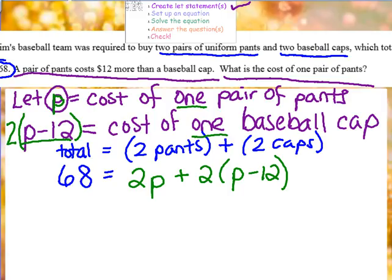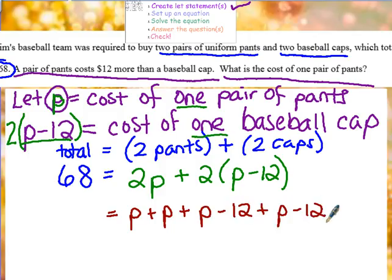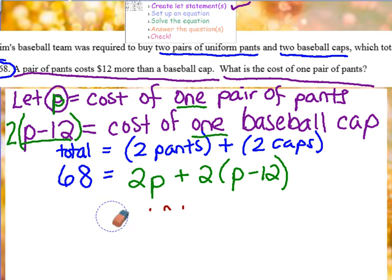My plus sign. And now two caps. If p minus 12 is the cost of one baseball cap, then we need to take this expression and double it, and multiply it by 2, to come up with the cost of two baseball caps. So I will write it like this. Some of you may be thinking of another way to write this equation, and there are other ways. For example, we could also write an equation like this: two pairs of pants and two caps. So either one, they're both equivalent. I'm going to use the one from up above. Now that we've created our equation, we just need to solve.